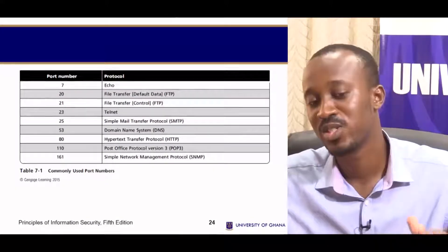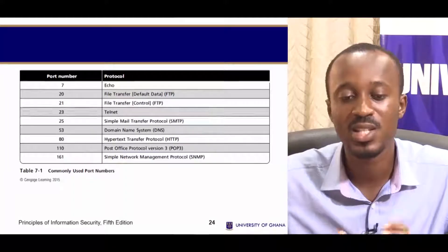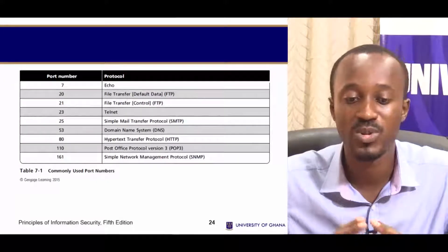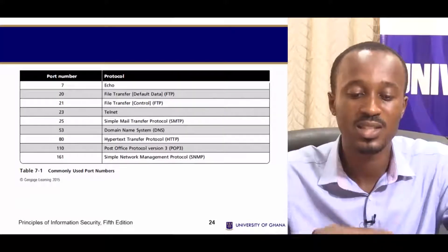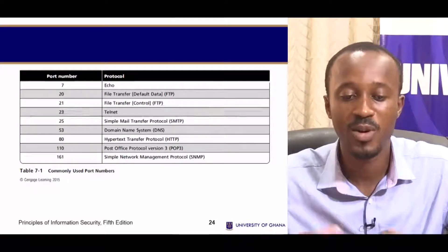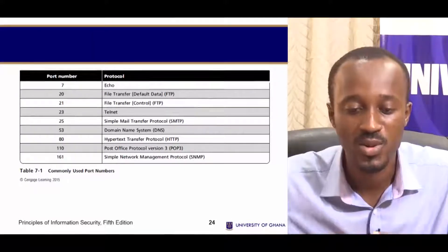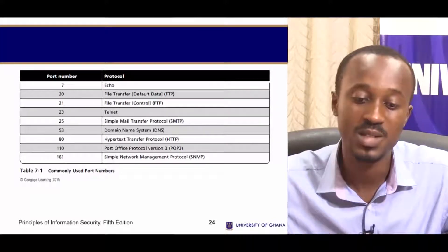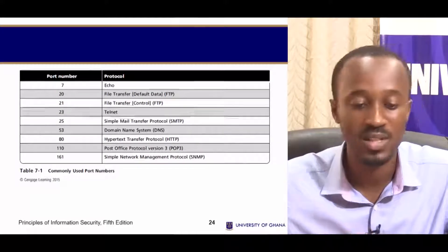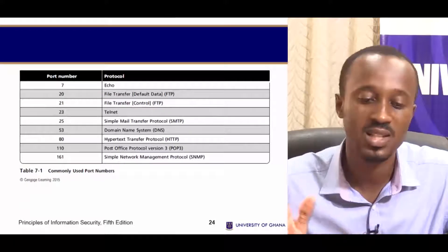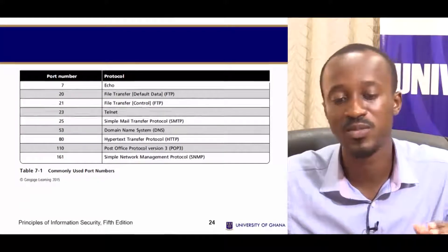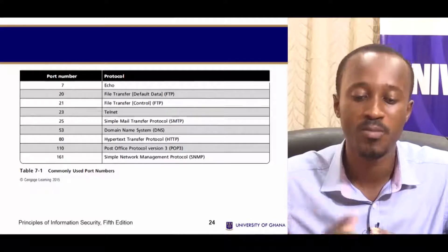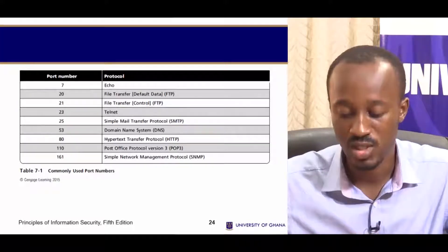On the screen there is a table showing some of the well-known ports and protocols. The popular echo port is port number 7, SMTP is port 25, DNS is port 53, and POP is port 110, and so on.